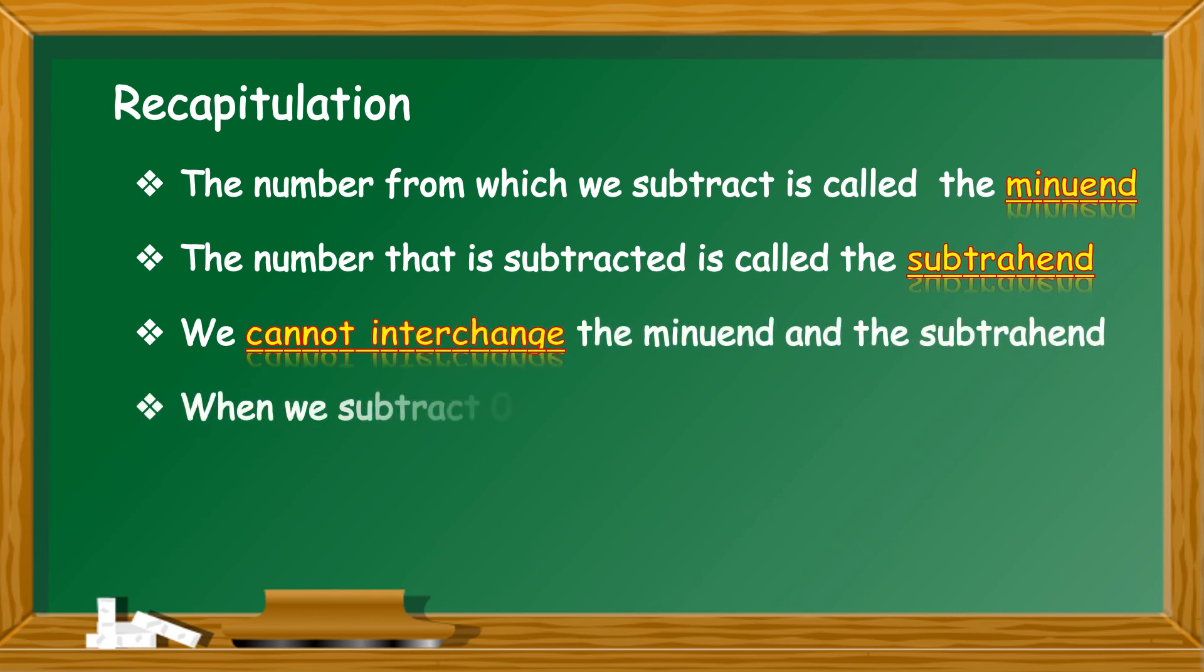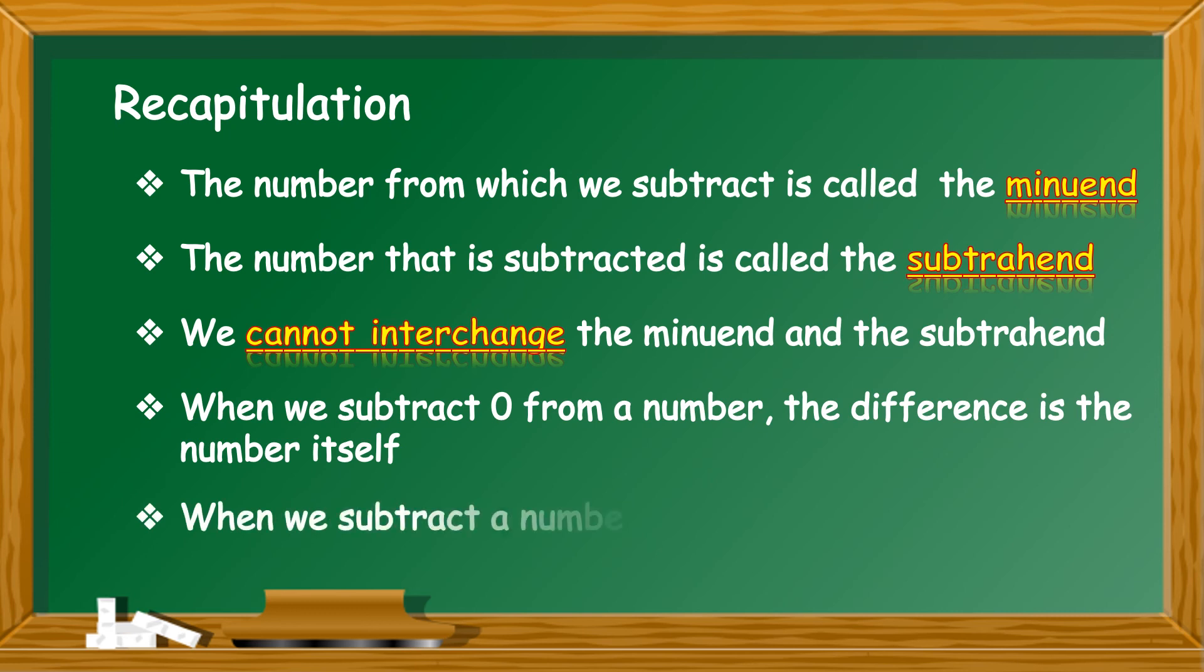When we subtract 0 from a number, the difference is the number itself. When we subtract a number from the number itself, the difference is always 0.